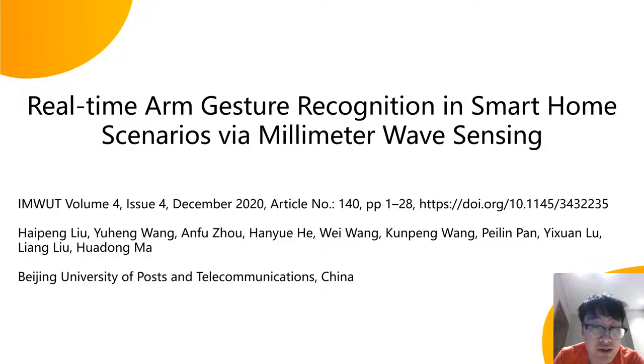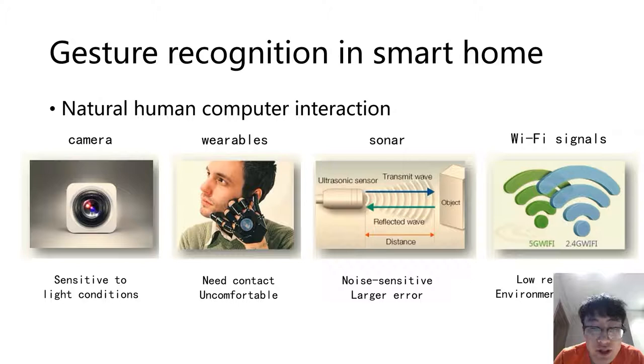In-air gesture recognition is a key human-computer interaction that brings natural user experiences, like a user can control their home appliances remotely by only swiping their hand. Traditional work utilizes sonars, wearables, or cameras as gesture sensors, but they have multiple shortcomings: limited sensing range, the discomfort of wearing contact, and the risk of privacy leakage, respectively.